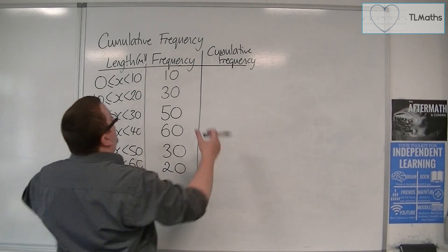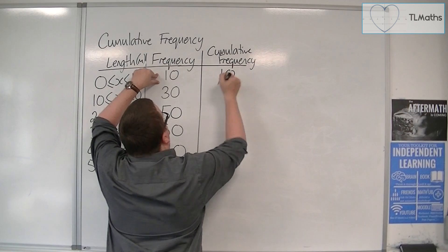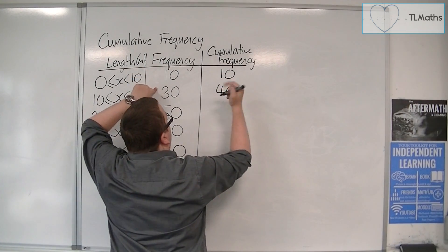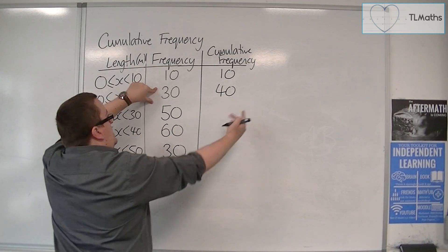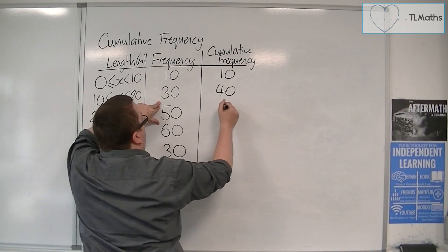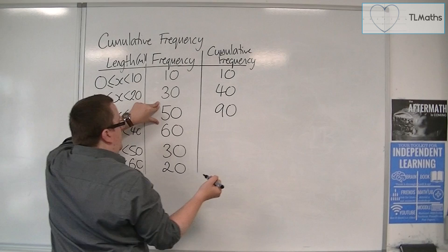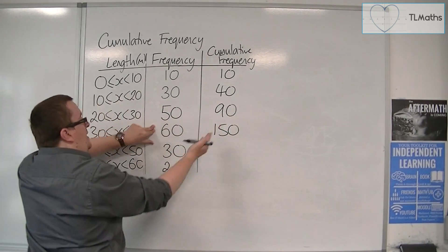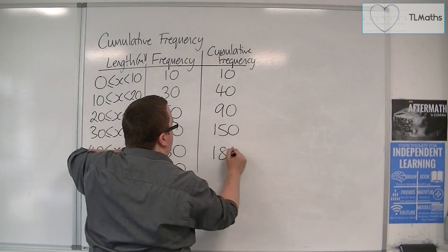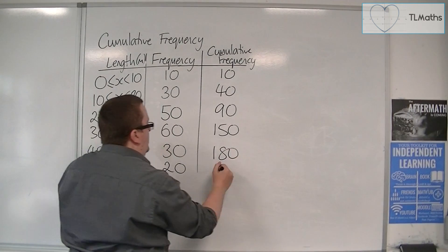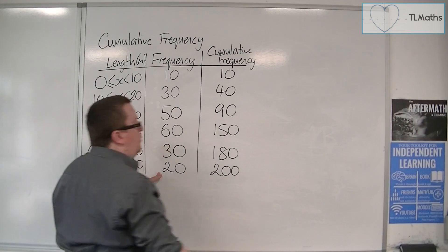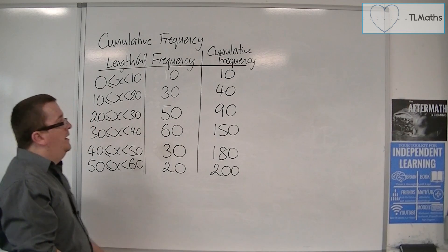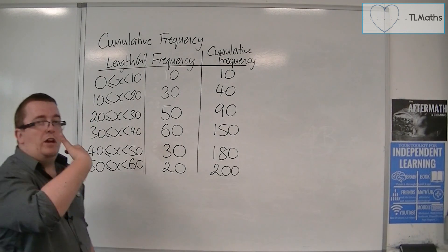So what we're doing is we're starting off with 10 and then we're adding on another 30 and so we would go from 10 up to 40. Then we'd add on another 50 and so we'd end up with 90. Then we'd add on 60 and we'd get to 150. Then we'd add on 30, we'd get to 180. And then we'd add on 20 and we'd arrive finally at 200. And so this is the cumulative frequency, how the frequency is accumulating.